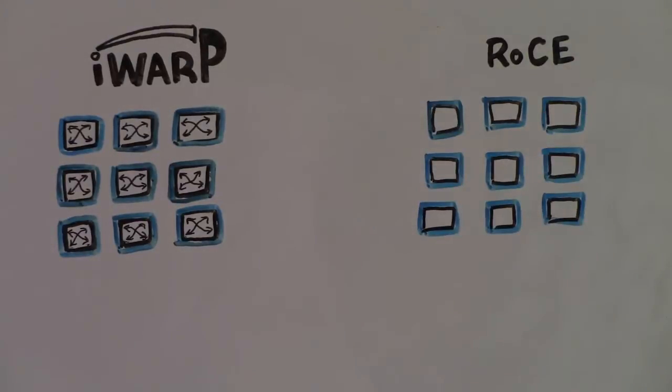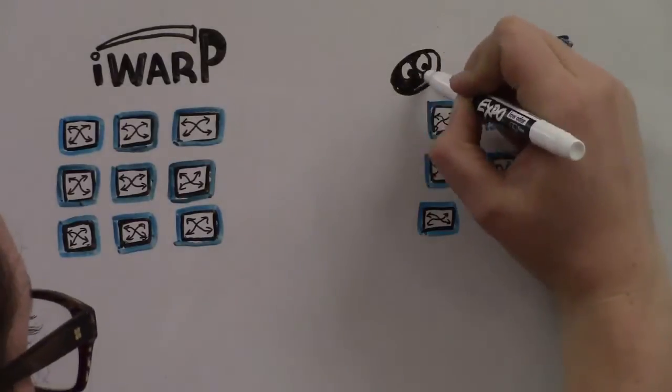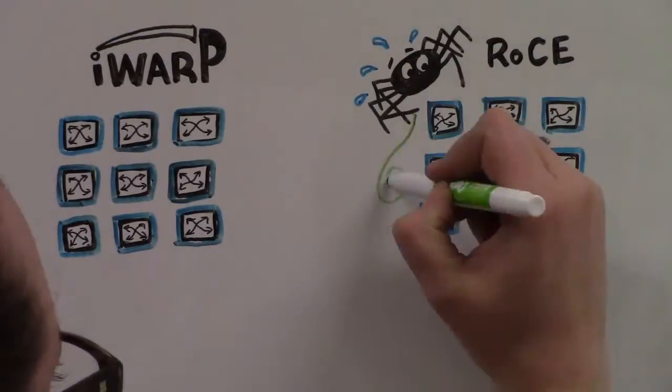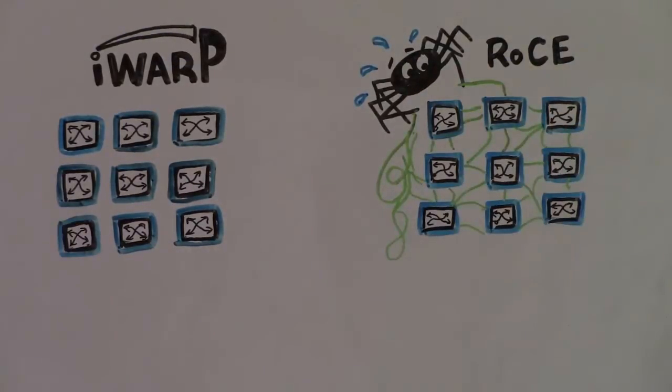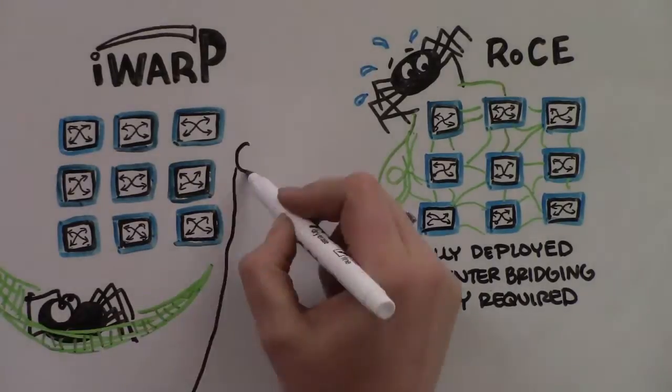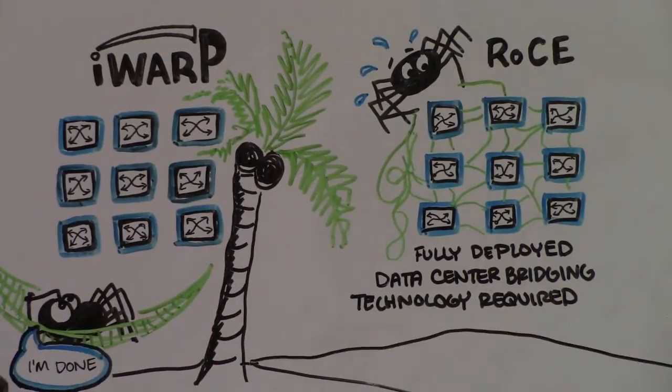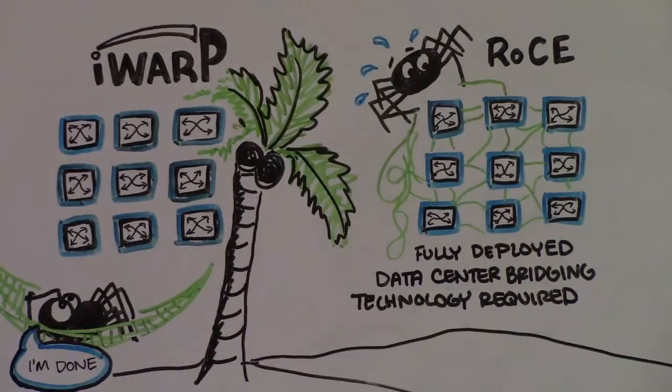RoCE's first challenge is that within the local subnet, sometimes called the L2 subnet, RoCE requires fully deployed data center bridging technology to make its network lossless. In practice, that means that data center admins need to physically configure every switch to support the DCB traffic classes. This is in direct opposition to industry trends towards data center automation and away from highly labor-intensive manual configurations.